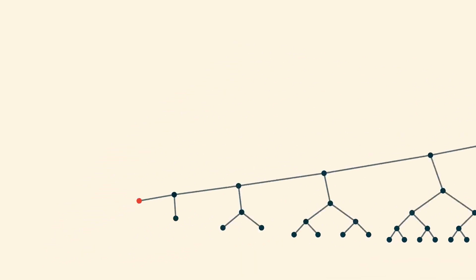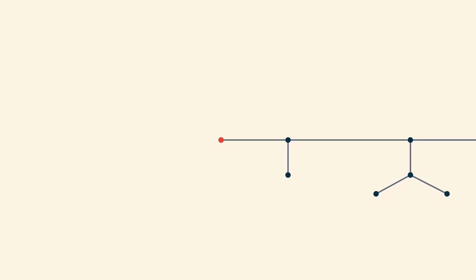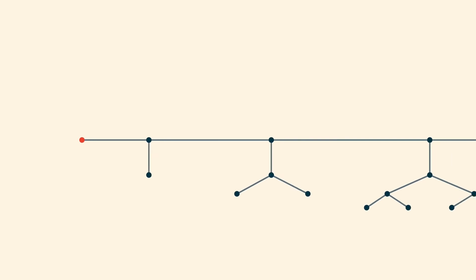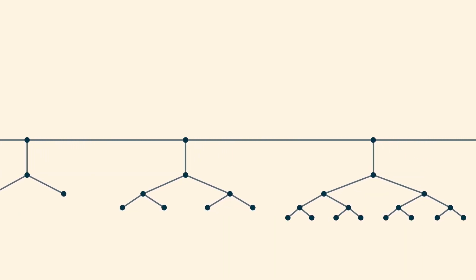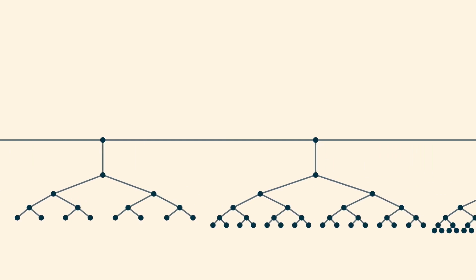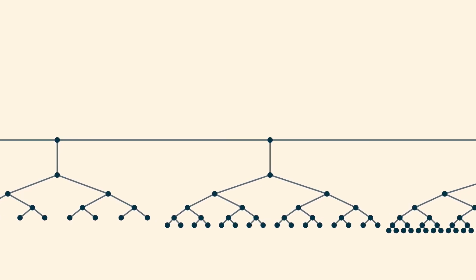From a leaf's perspective, this is what the binary tree looks like. As the tree gets bigger, from this perspective, the natural limit is a one-way infinite path, where the nth node along the path has a binary tree of height n attached to it. Note that a binary tree of height 0 is empty.